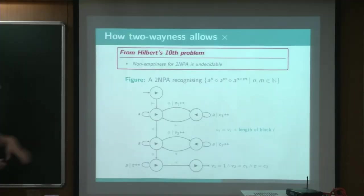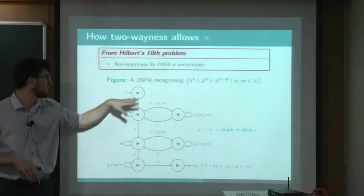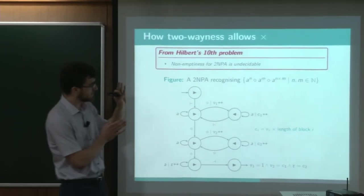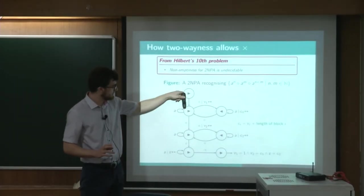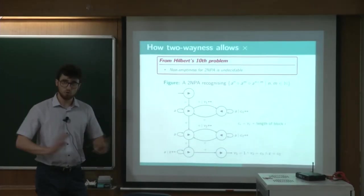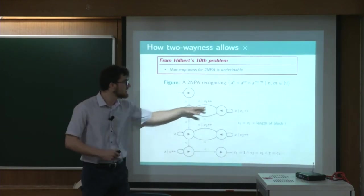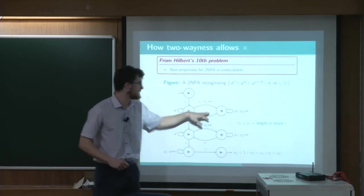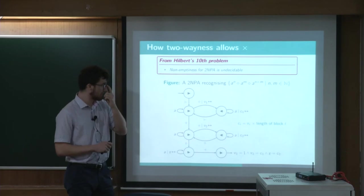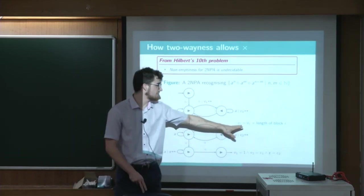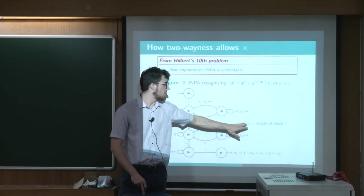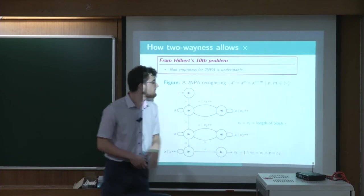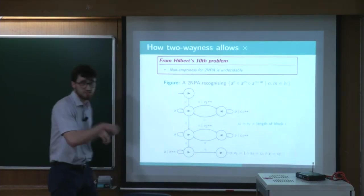So here it is. At the beginning, the automaton just doesn't do anything, just reach those first diamonds. And here is a non-deterministic choice. Either he passes over and never go back, either he accumulates the length of the first block by reading it backwards. And then here we have an invariant which says that the accumulator C will be the length of the current block times the number of visits of this state of this gadget.